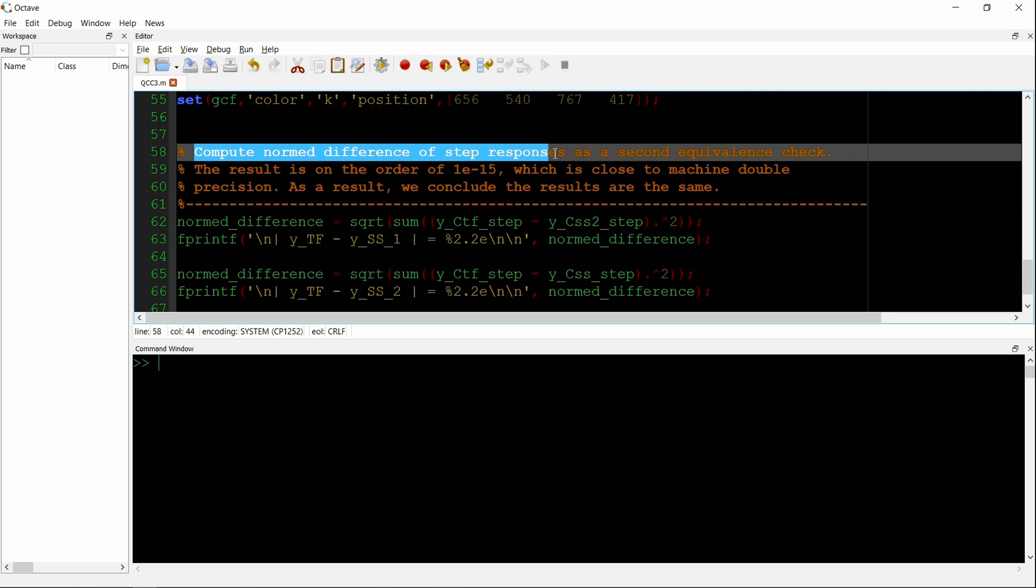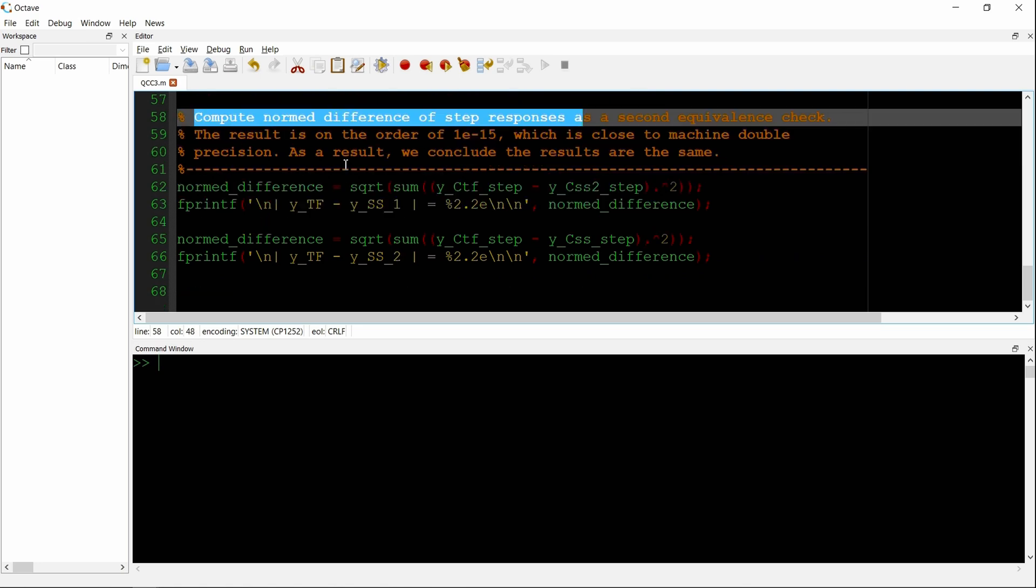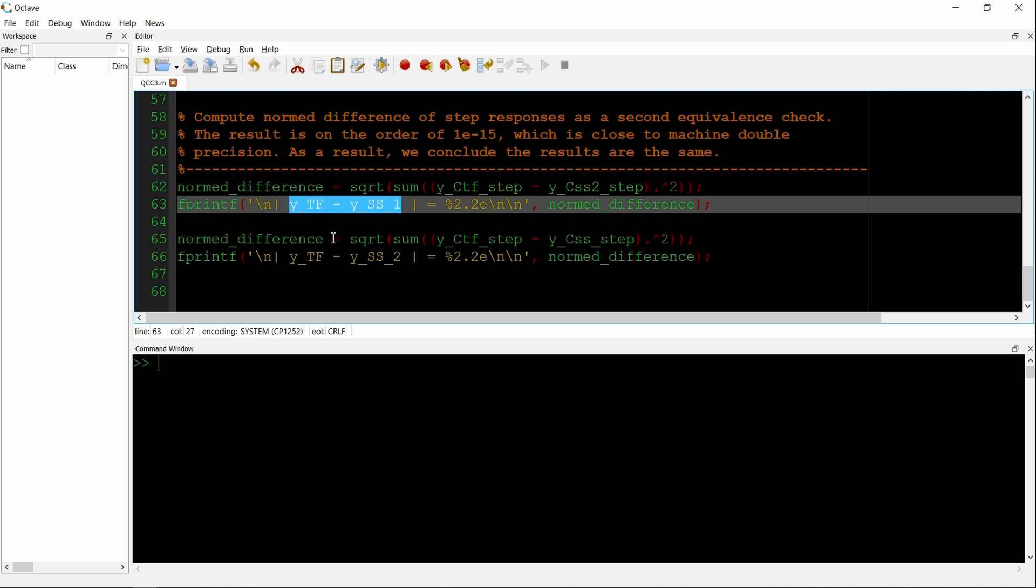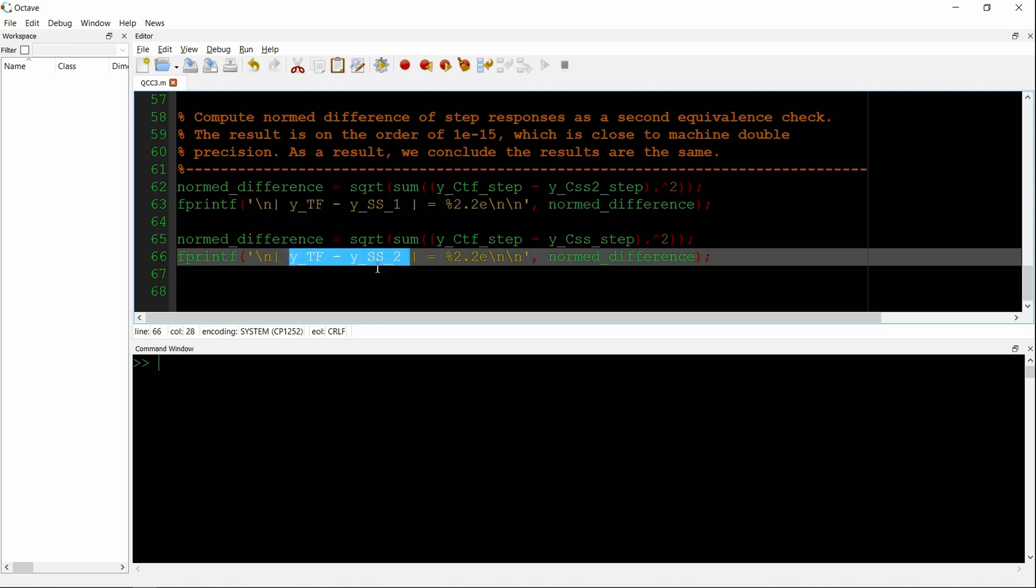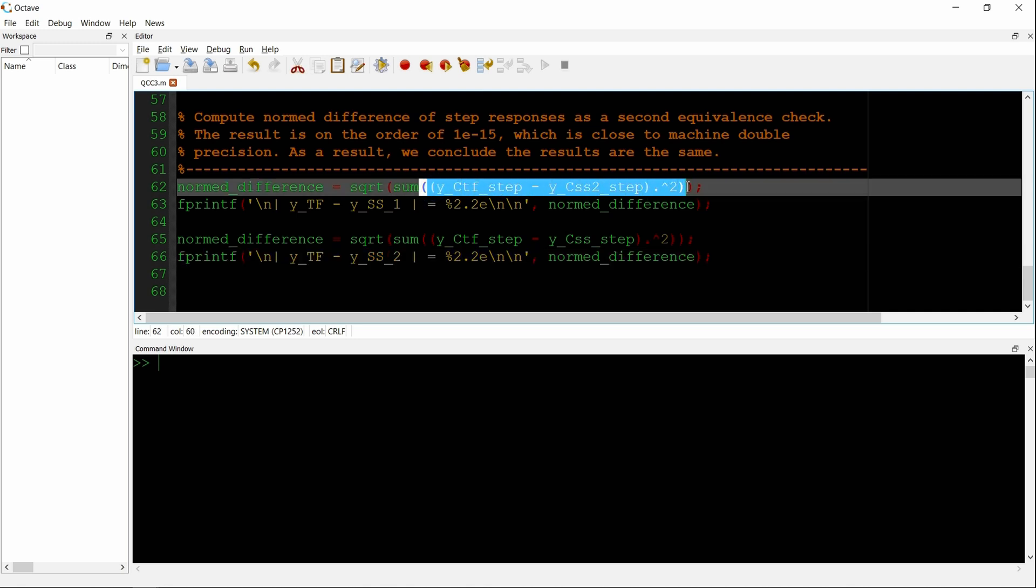And then here's a plot to compare the step responses. And finally, beyond just by inspection, visually confirming agreement, we compute the norm of the difference between the transfer function and each state-space system. This is the square root of the sum of the difference between the transfer function and state-space system at each time step squared.